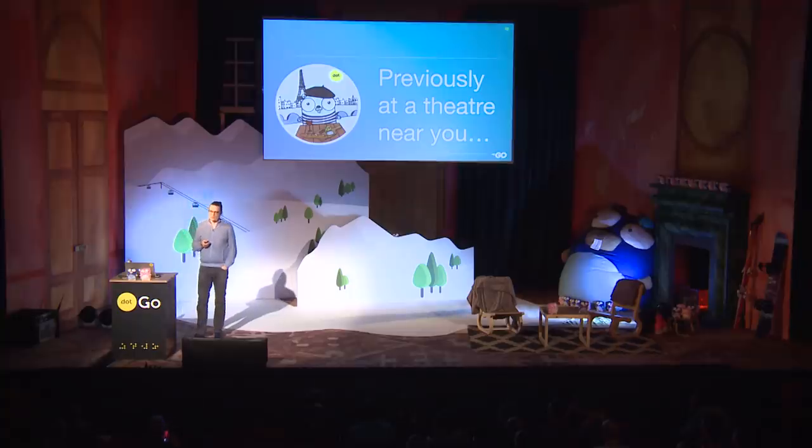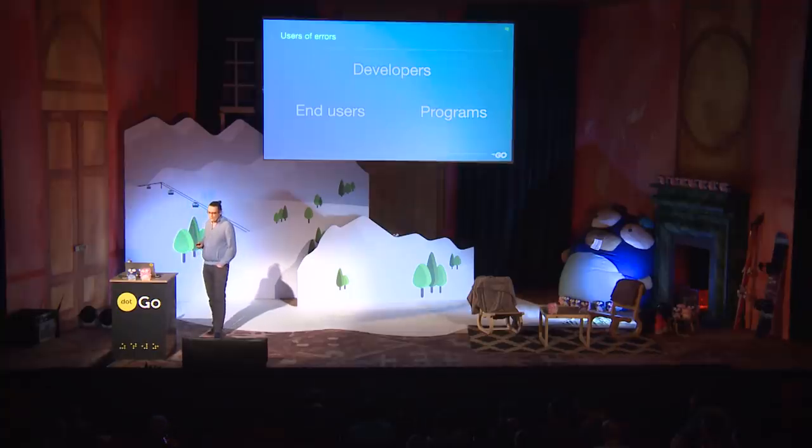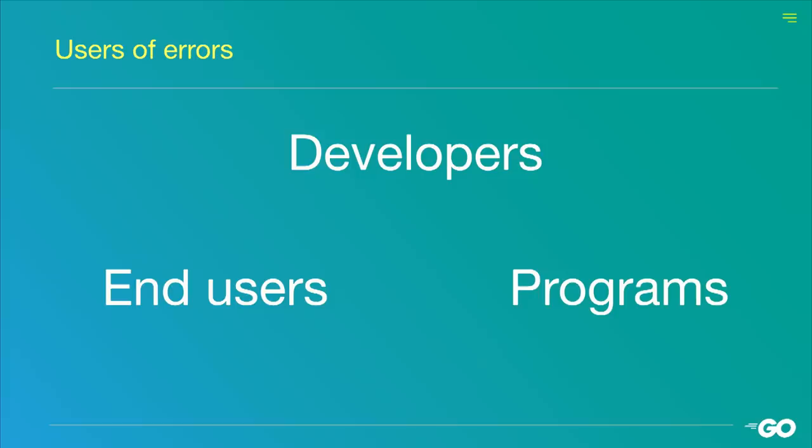Since then, I sort of rolled into doing more error stuff, and together with a lot of other people on the Go team, have looked more into possible language and library changes related to errors. So today, I want to talk to you about some of the library changes, and specifically the error values proposal that we would like to get into Go 1.13. But before I get into the details, I would like to give you some of the reasoning and thinking behind that.